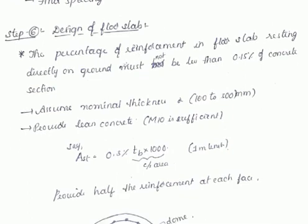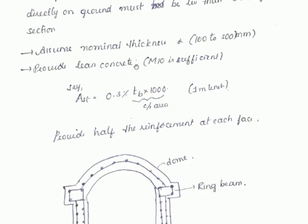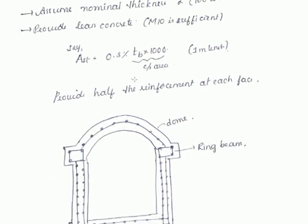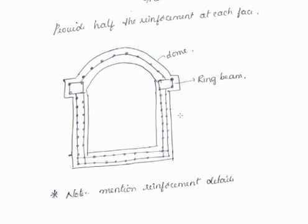For the design of the floor slab, the percentage of reinforcement must not be less than 0.15% of the concrete section. Assume a nominal thickness of 100 to 300 mm and provide lean concrete — M10 concrete is sufficient. Take 0.3% of the cross-sectional area, where tv is the thickness of the slab. Find the number of bars required and their spacing based on the area of steel calculated. Please let me know if you have any doubts.